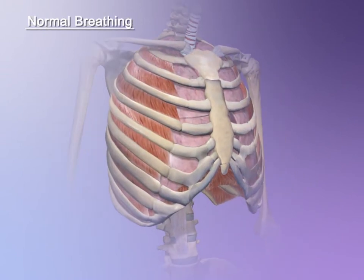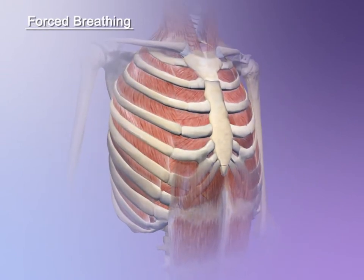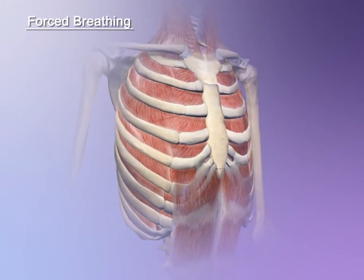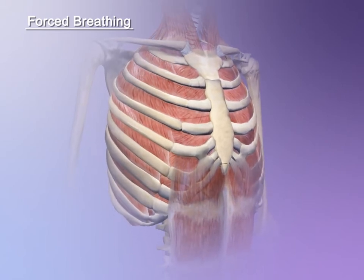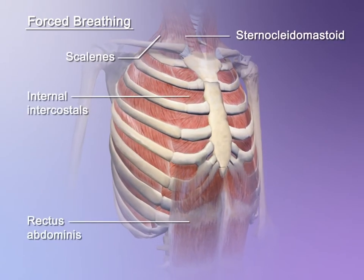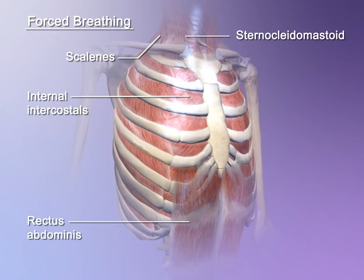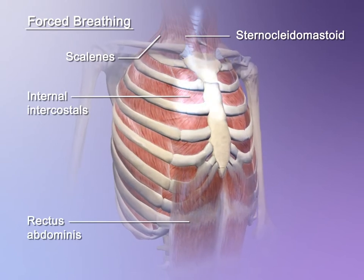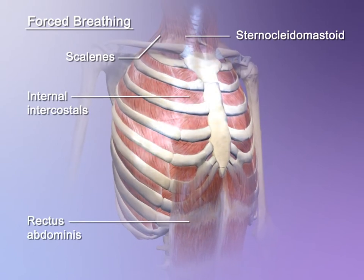The body's demand for more oxygen can change normal breathing to forced breathing. Additional muscles increase the changes in volume of the thoracic cavity so that more air can pass in and out more rapidly.